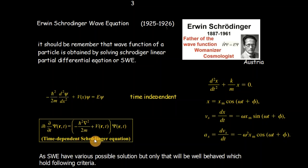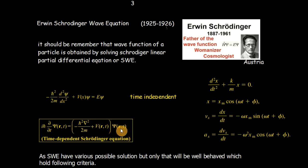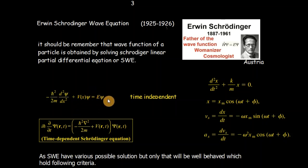The time-dependent Schrödinger equation is: iħ (∂/∂t) ψ(r, t) = [−ħ²/2m ∇² + V(r,t)] ψ(r,t), where ψ is a function of position r and time t. Remember that we are not interested in deriving these equations; we are only interested in the wave function ψ. From these two expressions we will find ψ, and then use mathematical tools to extract required information.